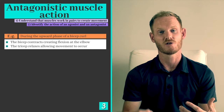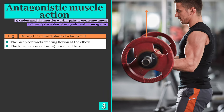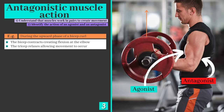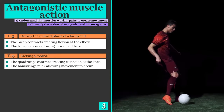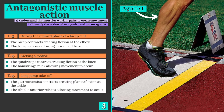Here are some examples to demonstrate antagonistic muscle action in a practical context. During the upward phase of a bicep curl, the bicep contracts and shortens, creating flexion at the elbow joint — the bicep has adopted the role of the agonist. The tricep meanwhile is the antagonist as it needs to relax to allow movement to occur. When kicking a football, the quadriceps contract to extend the knee while the hamstrings relax and lengthen. During a long jump takeoff, the gastrocnemius contracts and the tibialis anterior on the front of the lower leg relaxes, producing plantarflexion — the pointing downwards of the toes.